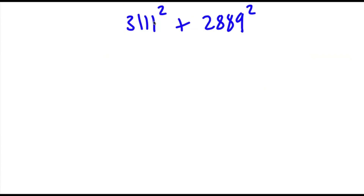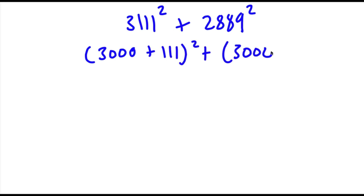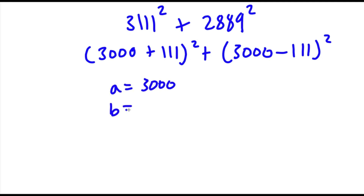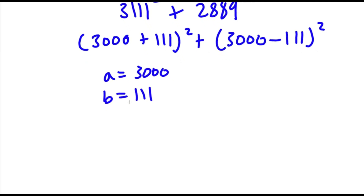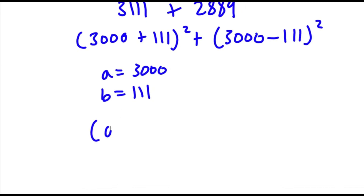Alright, so I have 3,111 squared plus 2,889 squared. The first thing I'm going to do is rewrite this as (3,000 plus 111) squared plus (3,000 minus 111) squared. Now I'm going to set a equal to 3,000 and b equal to 111. So if I substitute these in, I get (a plus b) squared plus (a minus b) squared.